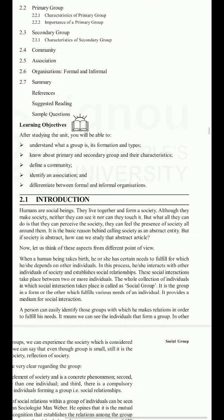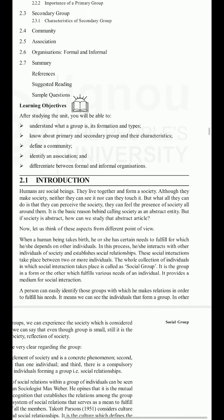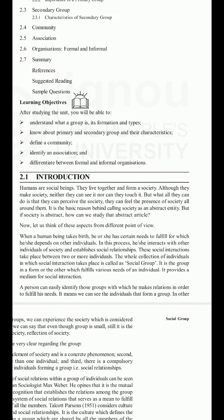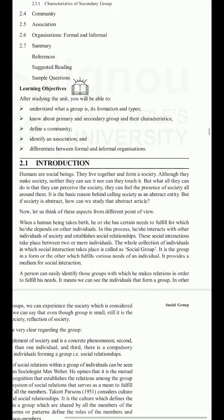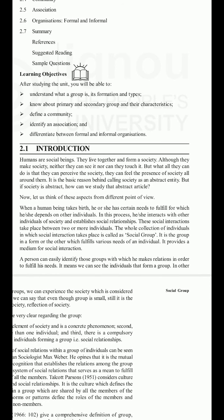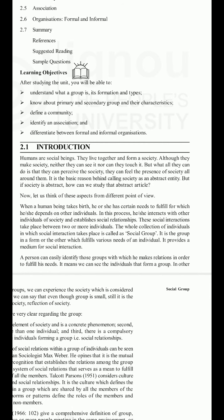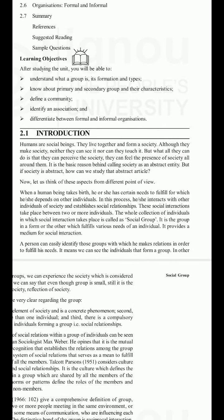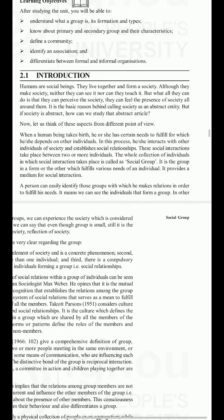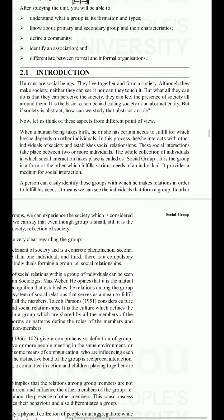You will know about primary and secondary groups and their characteristics, define a community, identify an association, and differentiate between formal and informal organizations. Introduction: humans are social beings. They live together and form a society. Although they make society, neither can they see it nor touch it, but they can perceive the society and feel its presence all around them.